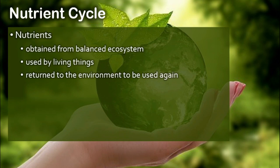What is a nutrient cycle? Nutrients can be obtained from a very balanced ecosystem. All living things, us included, we use these nutrients, and after we use them, we return them back to the environment. Then we use them again and return them again. That is why it is called a cycle — we take it and we put it back.